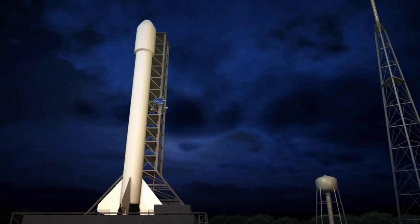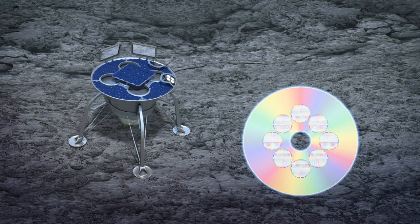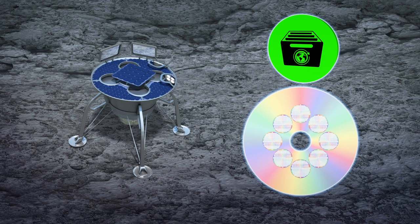CNN reports that when the Beresheet lunar lander was launched on SpaceX's Falcon 9 rocket Thursday, it was carrying a disk encoded with a 30-million-page archive of human history and civilization, dubbed the Lunar Library.